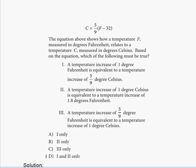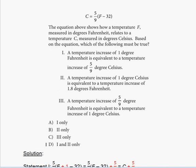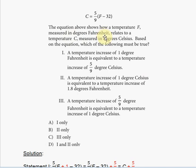They give you an equation that models temperature C measured in degrees Celsius in terms of temperature measured in degrees Fahrenheit. Based on the equation, they're asking which of the following must be true — they give you three statements and ask you to check each one to see which ones make sense.